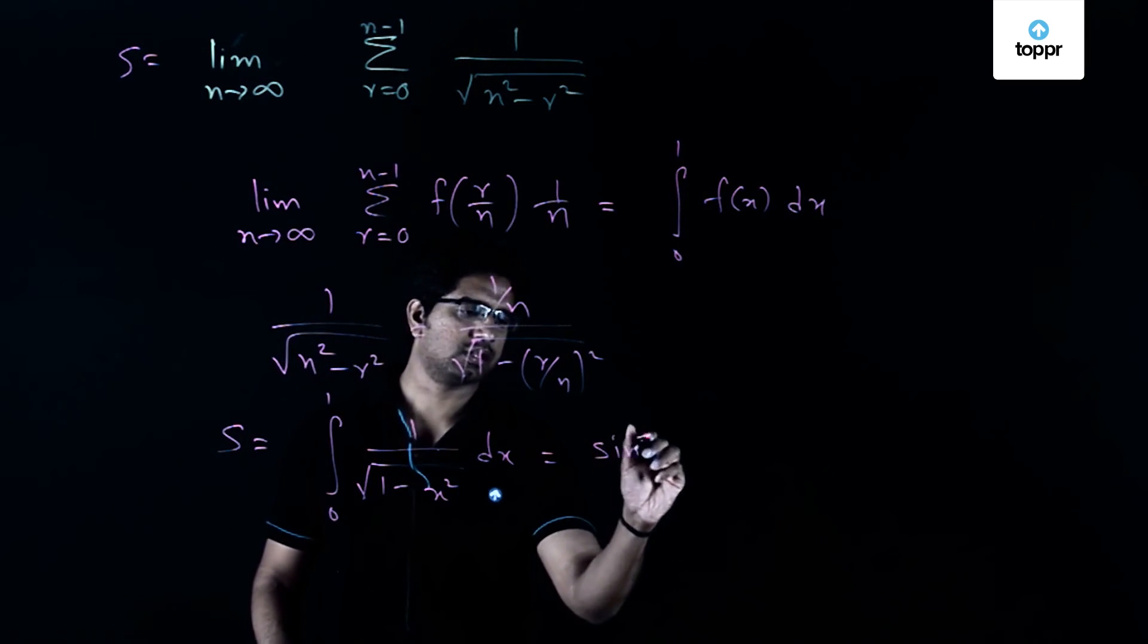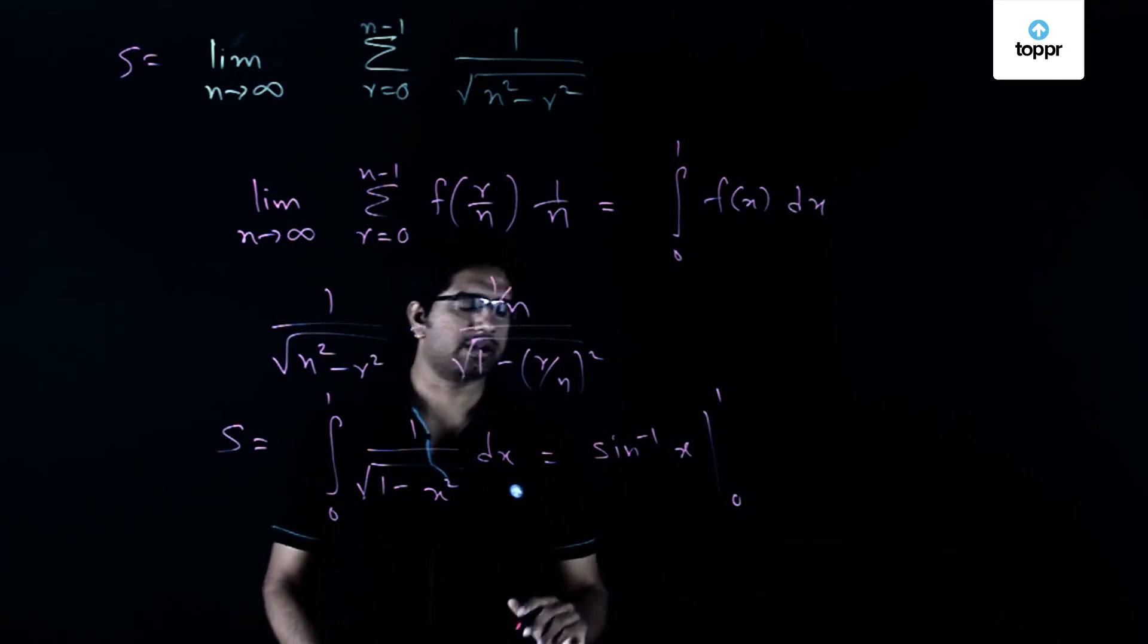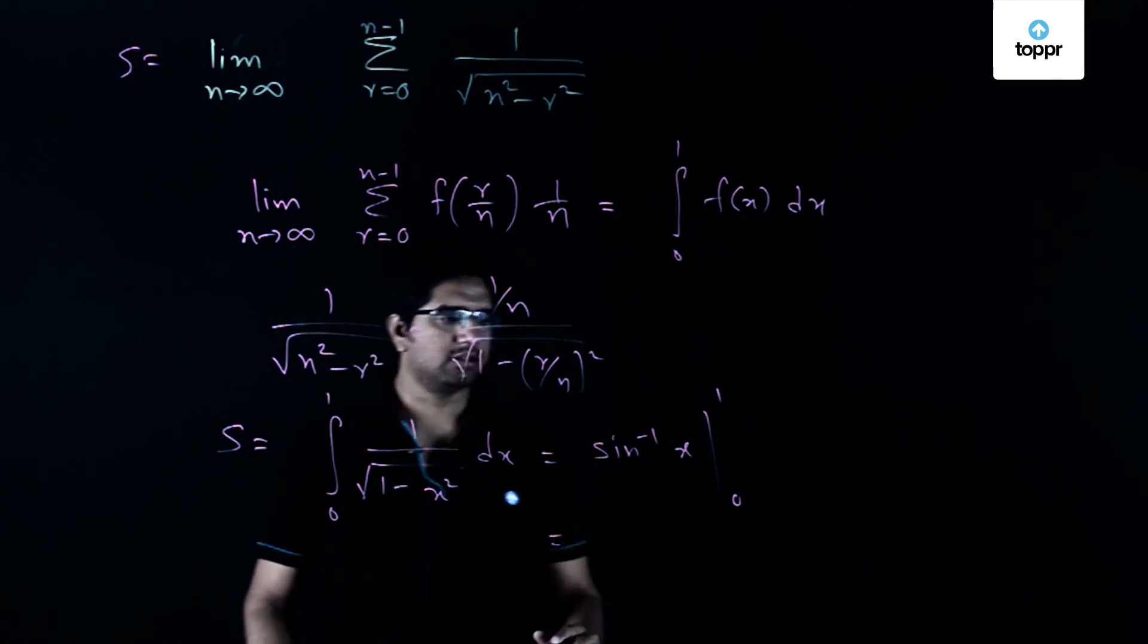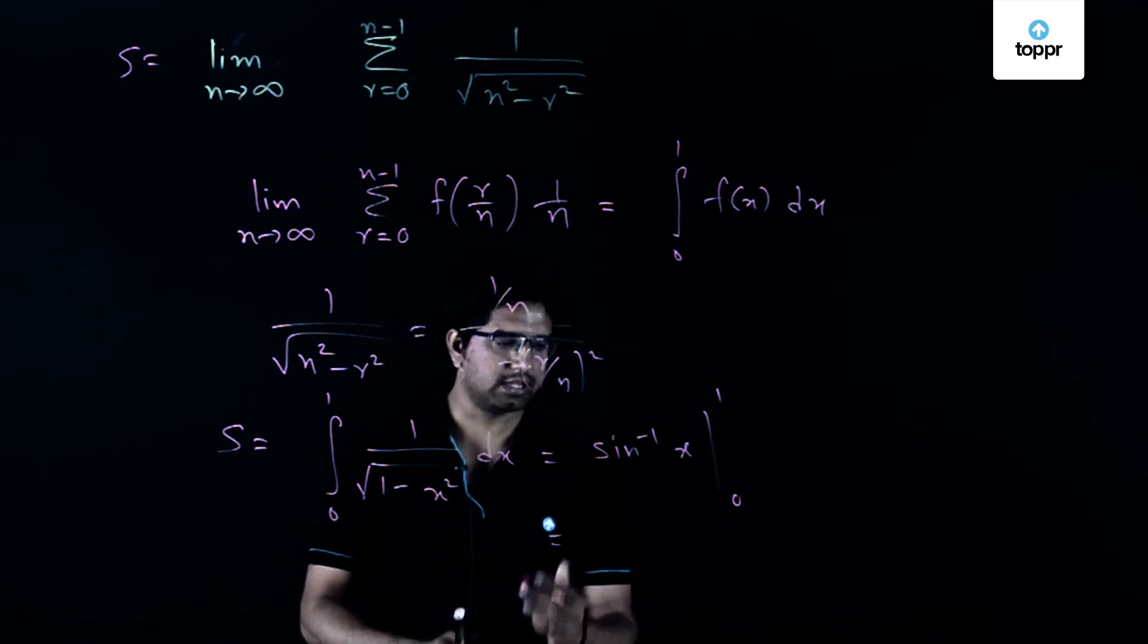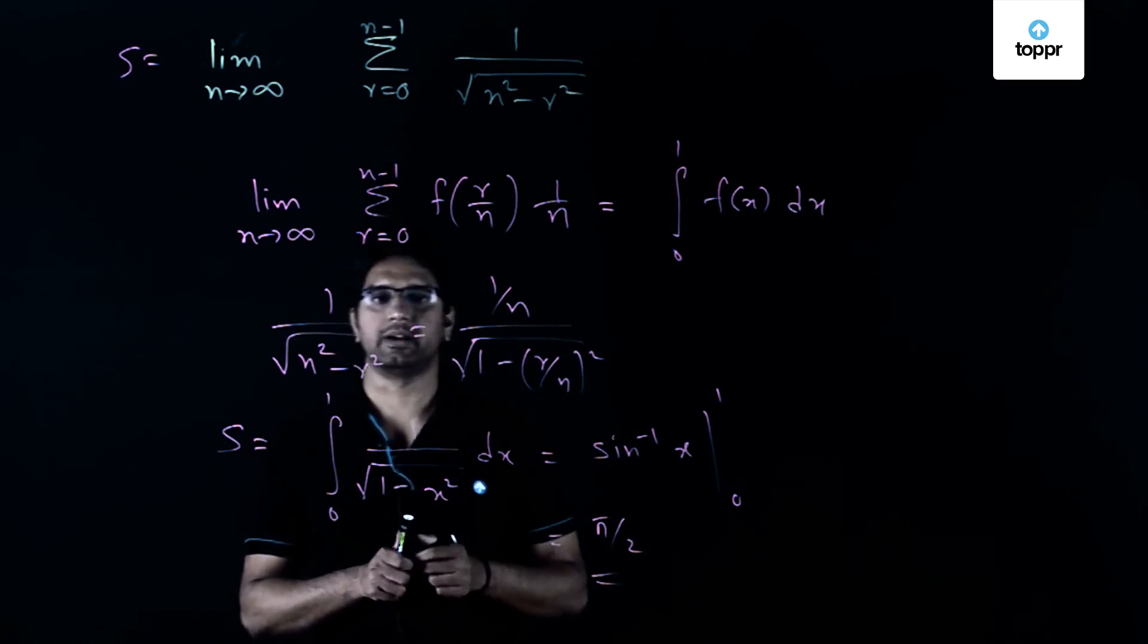This is equal to sine inverse of x where the upper and lower limits are 1 and 0. Hence we can write sine inverse of 1, which is equal to pi by 2, and the answer to this problem is pi by 2.